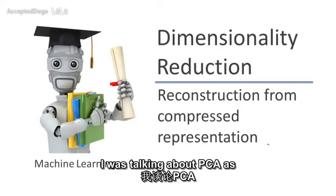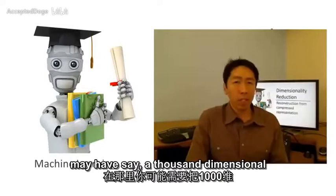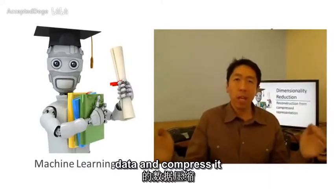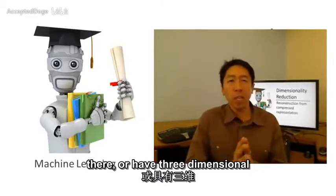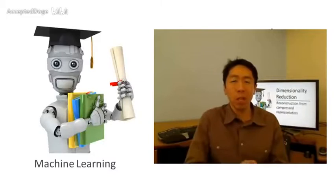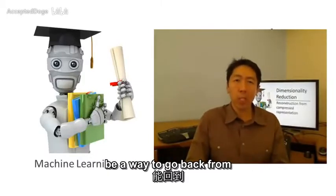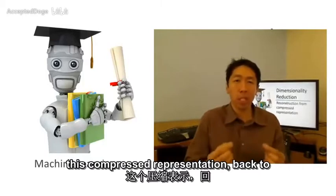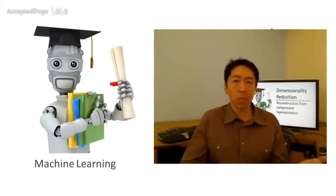In some of the earlier videos, I was talking about PCA as a compression algorithm, where you may have say a thousand-dimensional data and compress it to a hundred-dimensional feature vector, or have three-dimensional data and compress it to a two-dimensional representation. So if this is a compression algorithm, there should be a way to go back from this compressed representation back to an approximation of your original high-dimensional data.